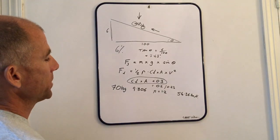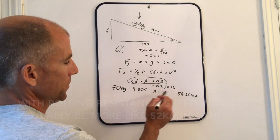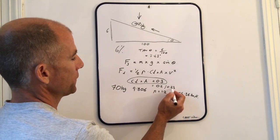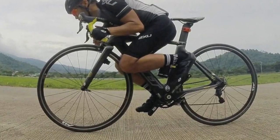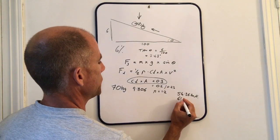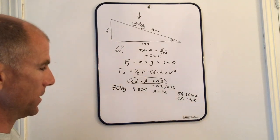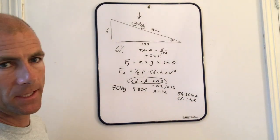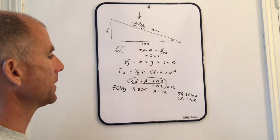If we plug the same figures in for the ultra-aero position, using this one here, the 0.23 CDA, then the figure which pops out is 62.1 kilometers per hour.